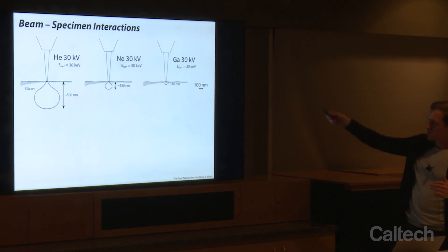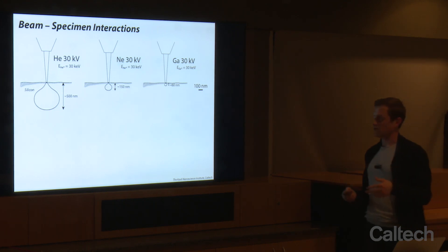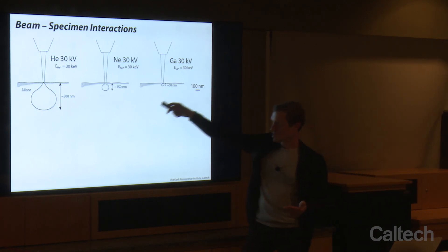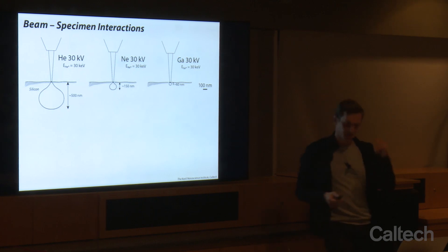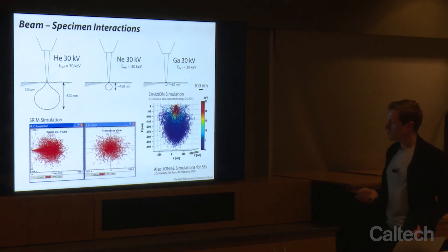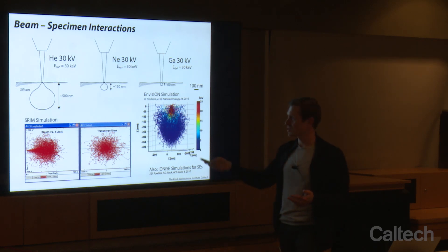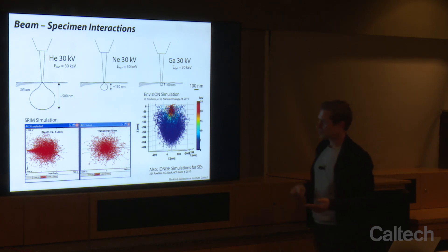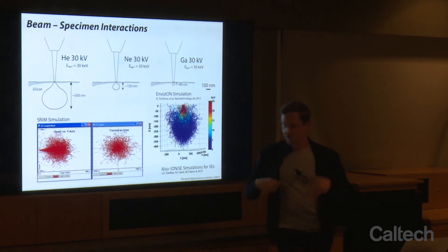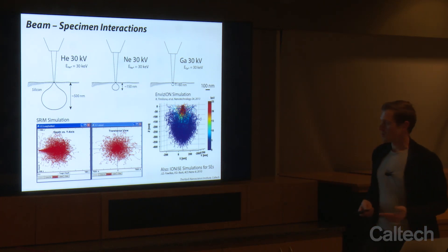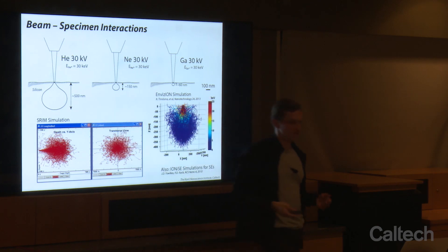We can look at different ion species — helium, neon, and gallium. For each one at 30 kV, each ion has 30 keV in energy. For helium, the stopping power isn't as great, so we might get 500 nanometers penetration in silicon; 150 nanometers for 30 kV neon; and 60 nanometers for gallium. We can simulate these using SRIM — Stopping and Range of Ions in Matter — the most common simulation used in the field. You pick your ion species, energy, and show what the scattering looks like in the specimen. It doesn't simulate an evolving surface or sputtering, so you can't simulate making a via, but it shows your damage zone as a function of energy and ion species. Other simulation software includes Invision and Ionize, which are being developed more in academia.